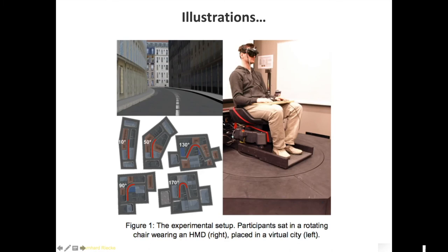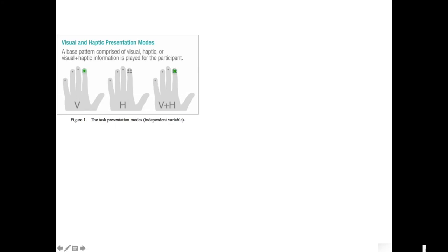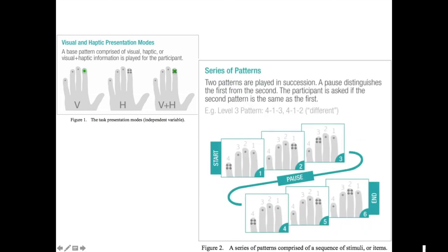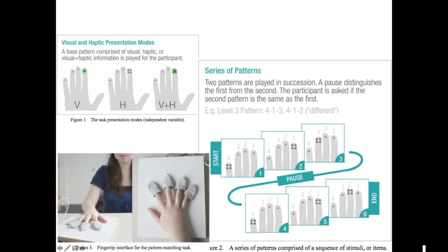Here's another example — it shows the setup where people are rotating, with top-down views. If you don't have a lot of space, you can try to combine these. Here's another on visual-haptic presentation — either visual with light blinking or haptic with vibrating or both — and there's an indication of how it actually looks. This is one of the examples where it's really useful to show, don't tell. Really show what's going on.